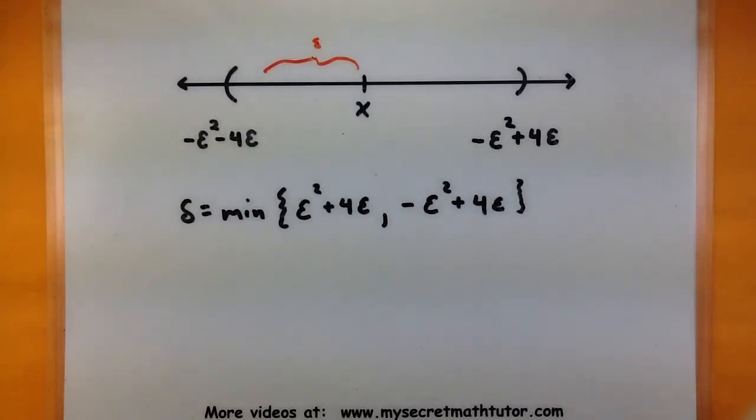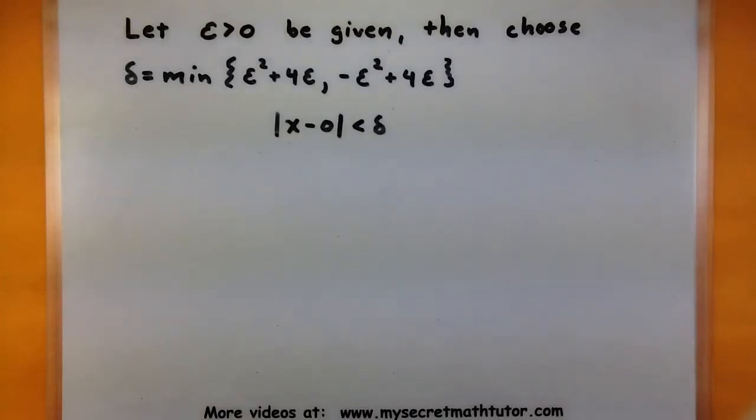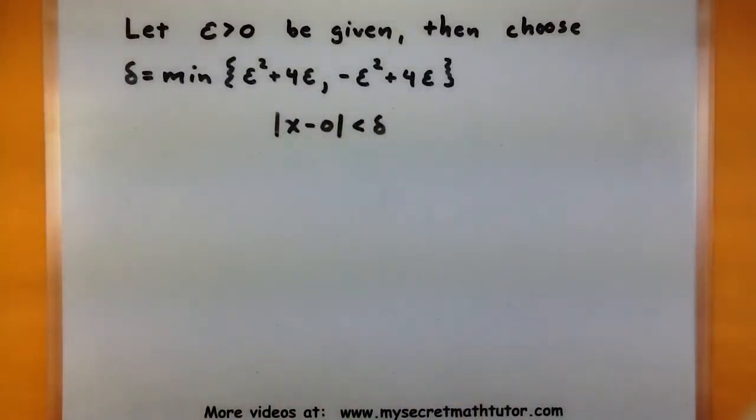Now that we've found delta, the second half of this is basically going through all of our steps in reverse order to show that this choice will actually force our function to be within epsilon of the value of two. So let's go ahead and see the actual proof. So when given some sort of epsilon greater than zero, I'm going to choose delta to be the minimum of these two things.